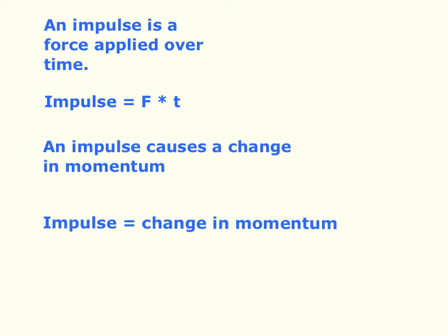So what is an impulse? An impulse is a force applied over time. So we run into something, and we push on it for a long time, or we push on it for a short time. The equation for impulse is impulse equals force times time. The technical abbreviation for impulse is J, which has no relationship to the word impulse, so I generally just write 'imp' — and that equals your force times your time.